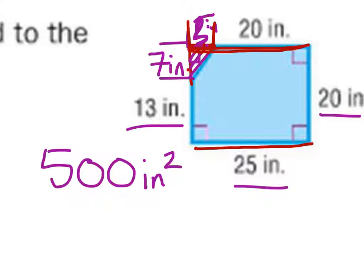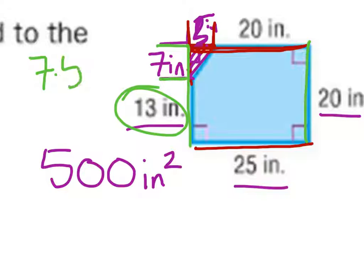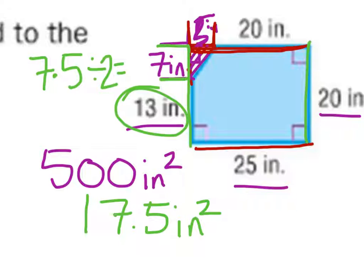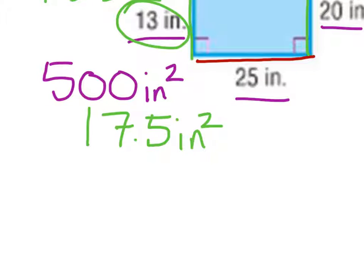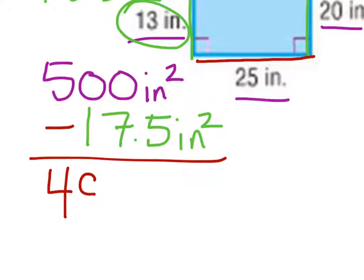So we'll find the area of that triangle: base times height, 7 times 5, but we do need to divide by 2. That gives us 17.5 inches squared. Now that we have that, we just take the area of the whole rectangle and subtract the amount that was missing from it. That gives us 482.5 square inches. Done.